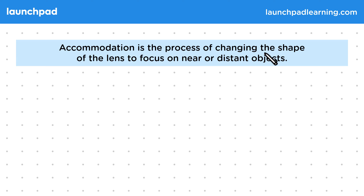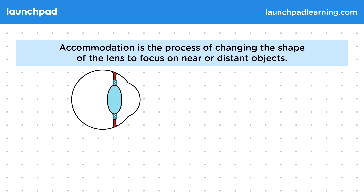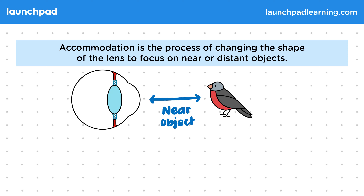Accommodation is the process of changing the shape of the lens to focus on near or distant objects. This diagram shows a simplified cross-section of the eye perceiving a nearby object — in this example, it's a bird. To be able to see this image in focus, the lens needs to be thick.